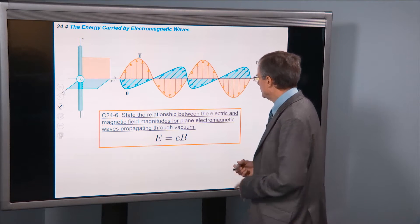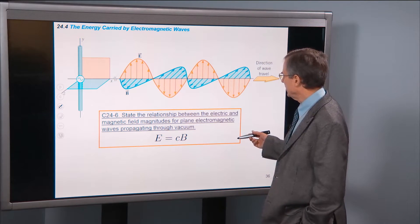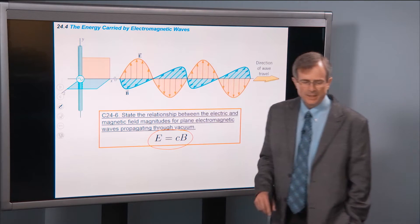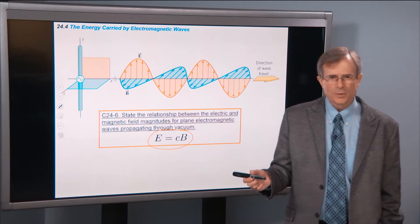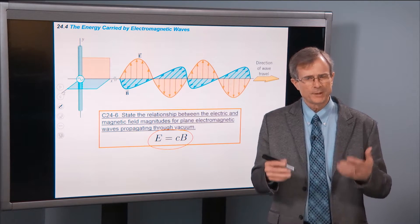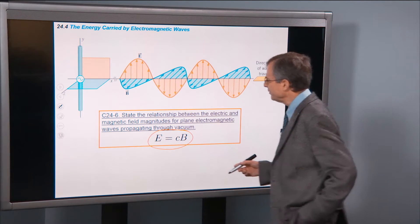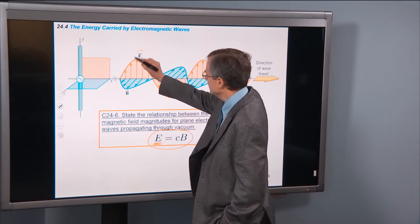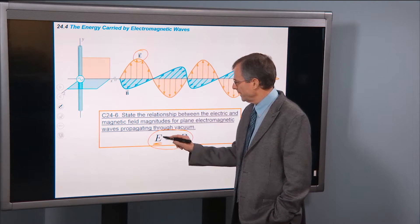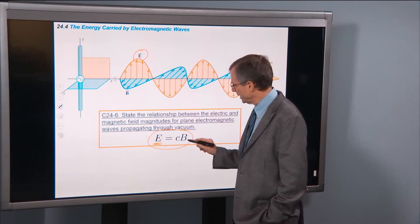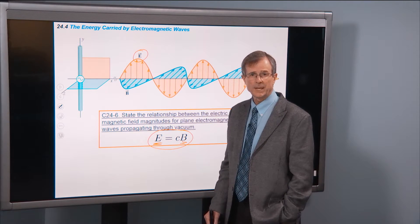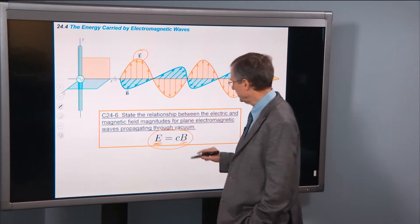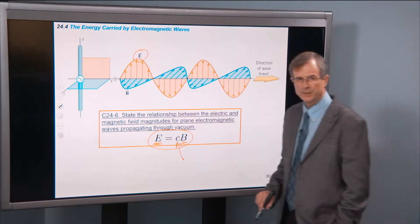State the relationship between the electric and magnetic field magnitudes for plane electromagnetic waves propagating through vacuum. e equals cb. This is a relationship that Maxwell found when he did that long calculation involving the four Maxwell equations. He found that the electric field magnitude is related to the magnetic field magnitude by a coefficient of proportionality that is equal to c, the speed of light, 3 times 10 to the 8.